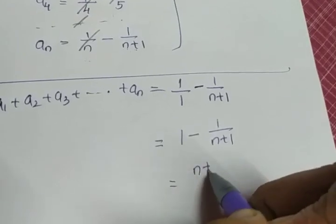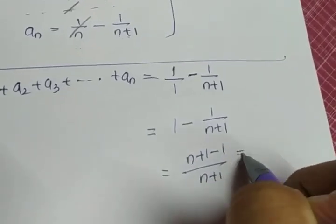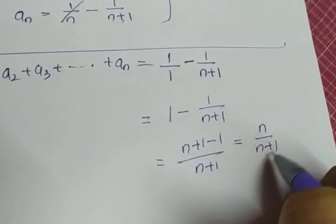Taking LCM, n plus 1 minus 1 by n plus 1, giving you the value n by n plus 1. This is the sum.